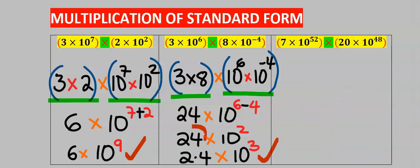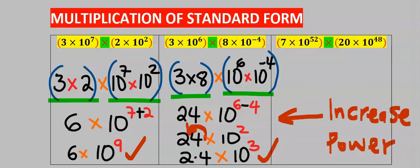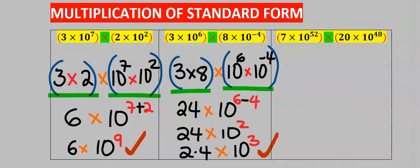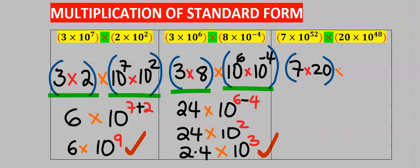Whenever you move a decimal to the left, you will increase the power — always remember this rule. Next, consider this multiplication of standard form. Step one: multiply the numbers. Step two: multiply the tens.